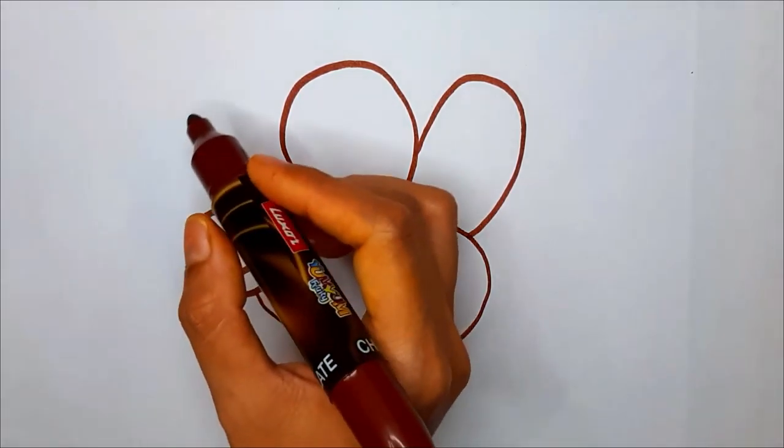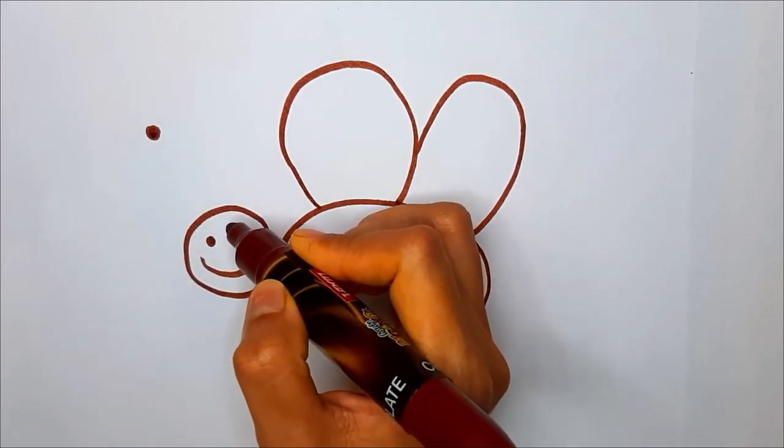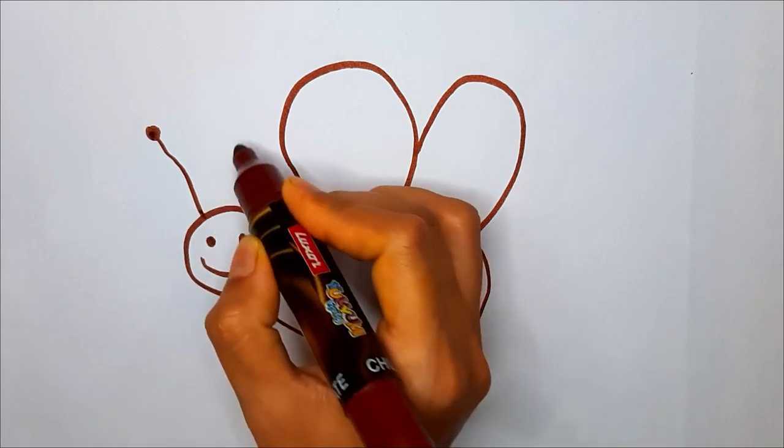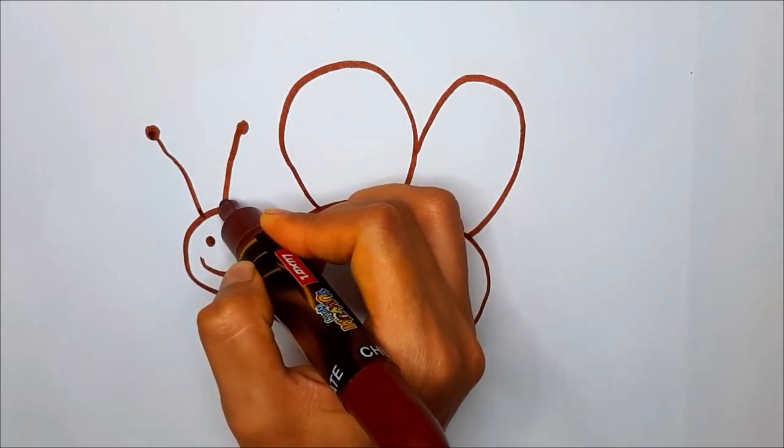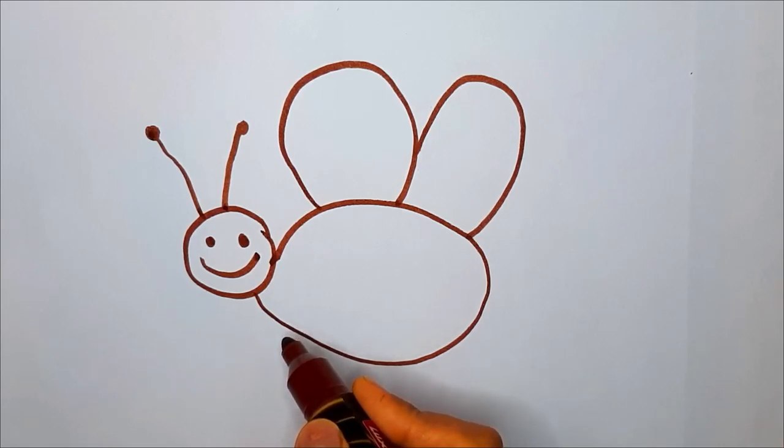Now let's make two tentacles, two antennas. Put the dot, join it. Put the dot and join it. Isn't it cute? Isn't it cute? Yours is done.